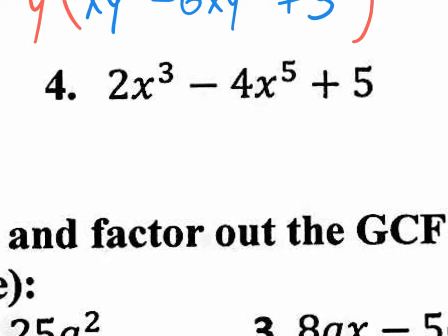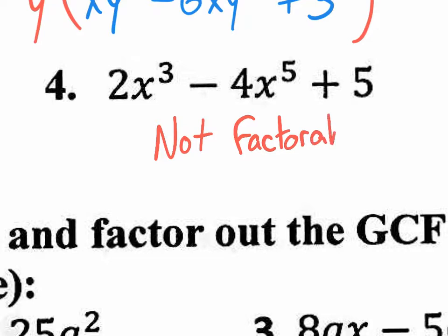Number four — what's in common in all three terms? There's a 2 here and a 4 there, but I can't pull a 2 out of all three terms. I have x to the third here and x to the fifth here, but I wish I had X's here — I don't. So when I'm thinking what's in common in all terms, I don't have anything in common in all terms. So am I able to factor this? No. What do I put here? Not factorable.